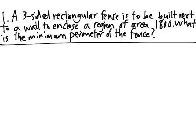First, let's draw a picture. Say that the wall is here, then the fence could go something like this. The area is 1800, and since it's a rectangular fence, we only have two possible different lengths here. Let's call them x and y, and this side is also x.